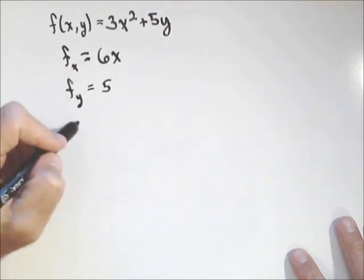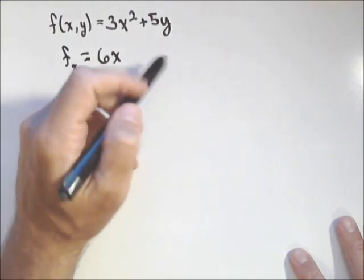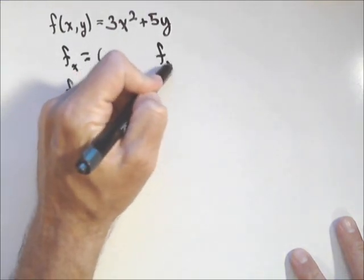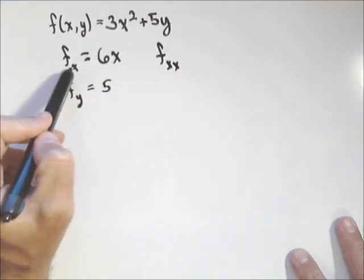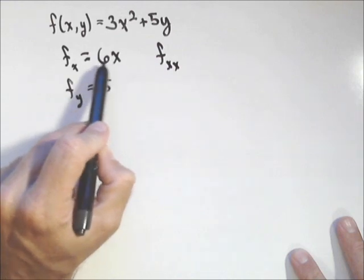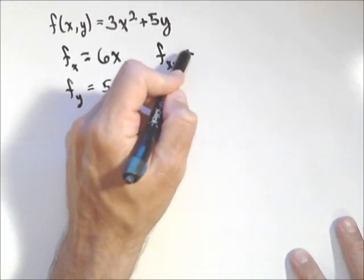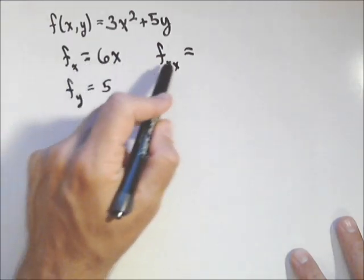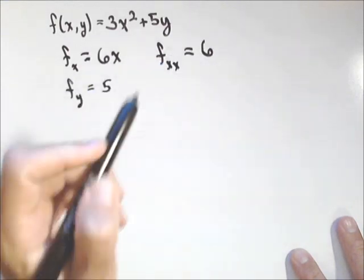Now we'll also talk about the second order partials. We have f sub xx, which is the derivative of f sub x with respect to x. So I'm going to take the derivative of this guy again, once again with respect to x. So the derivative of 6x with respect to x is just 6.